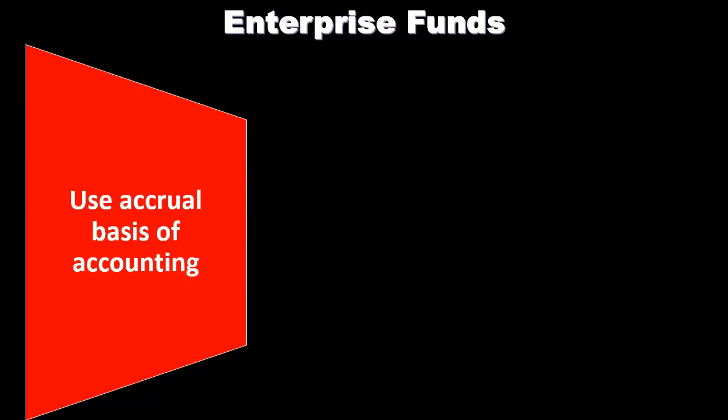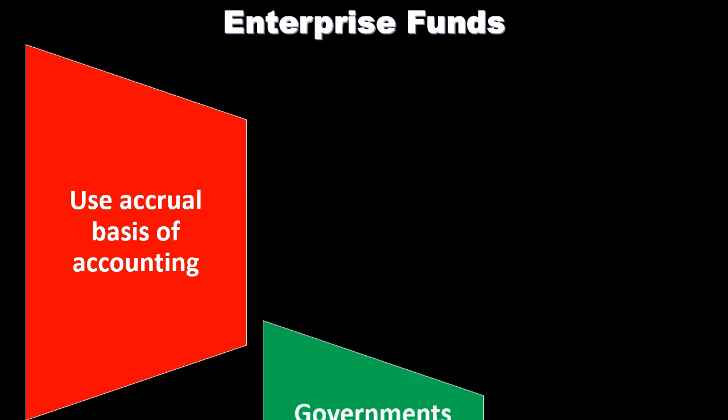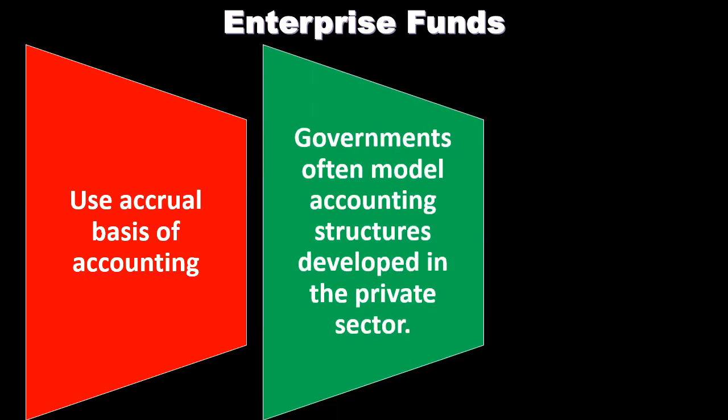Enterprise funds use the accrual basis of accounting. Proprietary funds use the accrual basis, as opposed to the major grouping — governmental funds — which use the modified accrual basis. This is more standard to what we would think of in for-profit accounting, different from the standard for most funds, which fall into the group of governmental funds.